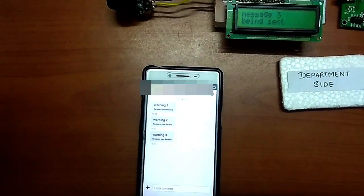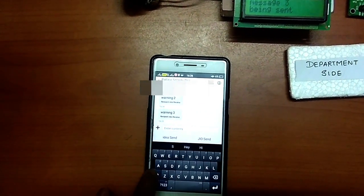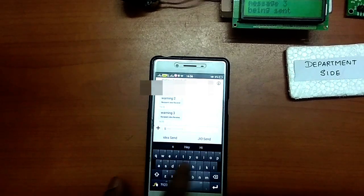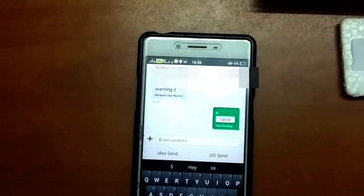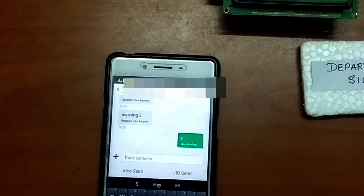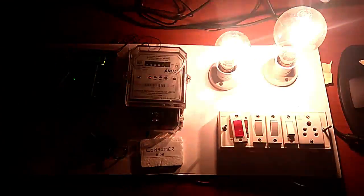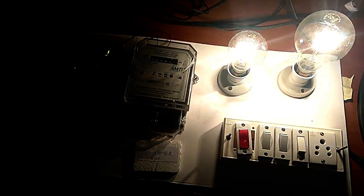After when the consumer pays the fine, a person from the electricity department will send a command to the consumer's house through powerline modem to restore the power supply. The power supply will be restored.